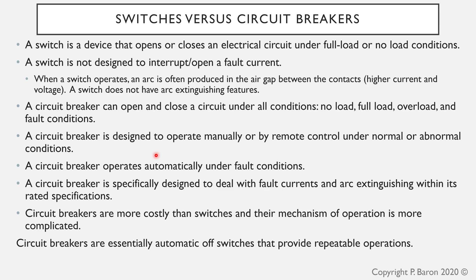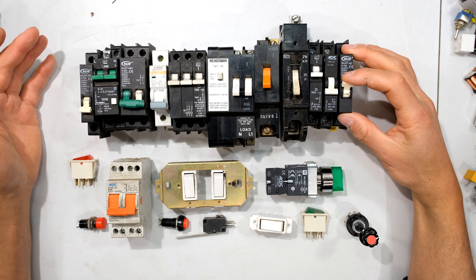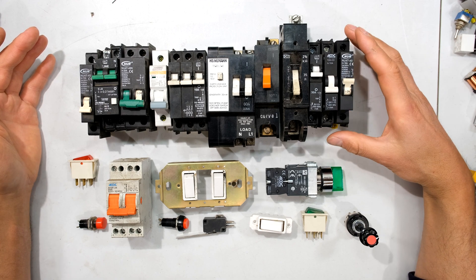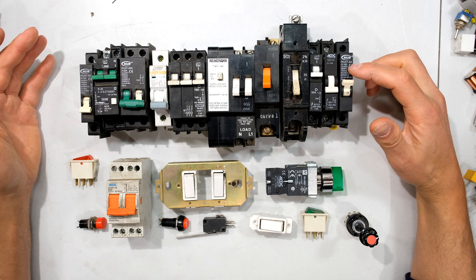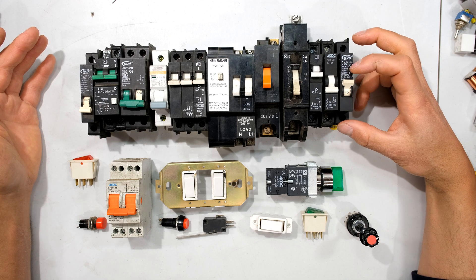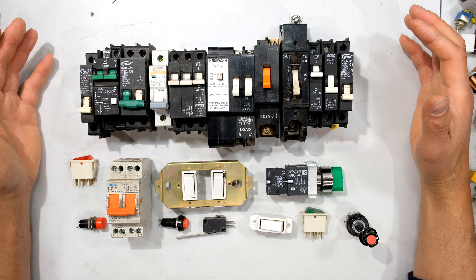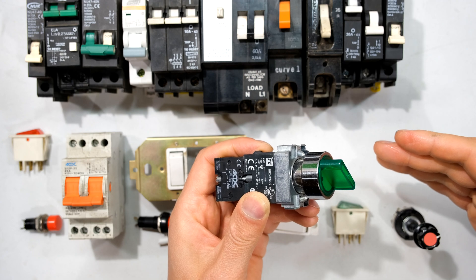A circuit breaker operates automatically under fault conditions. You can manually operate the circuit breaker — closing it and opening it — but when connected to a circuit and the current exceeds the rated current, in this case it says 16 amps on the front, if it exceeds about 16 amps this will automatically trip.